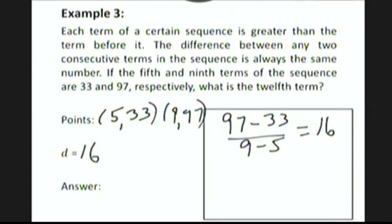So the ninth term of the sequence is 97 and we want to get to the 12th term of the sequence. So we have to add 16 to 97 three times to get a total of 145. So the 12th term of this arithmetic sequence is 145.